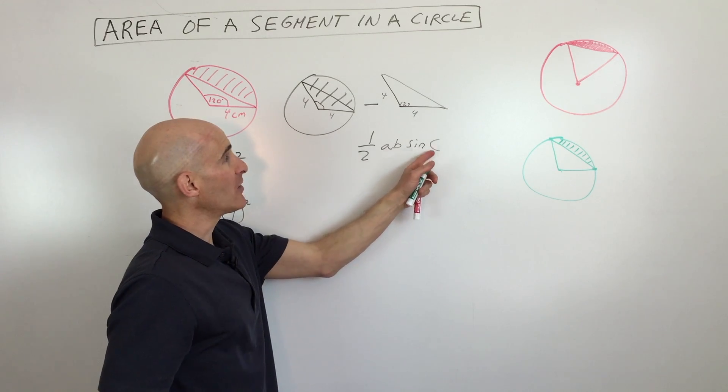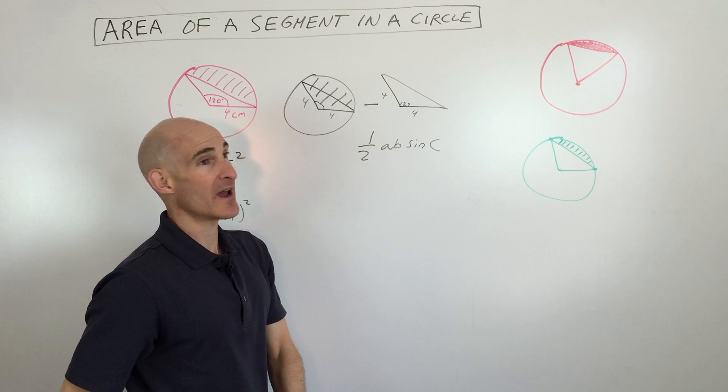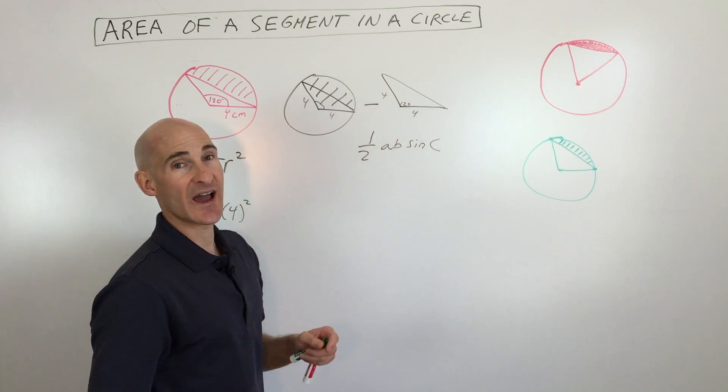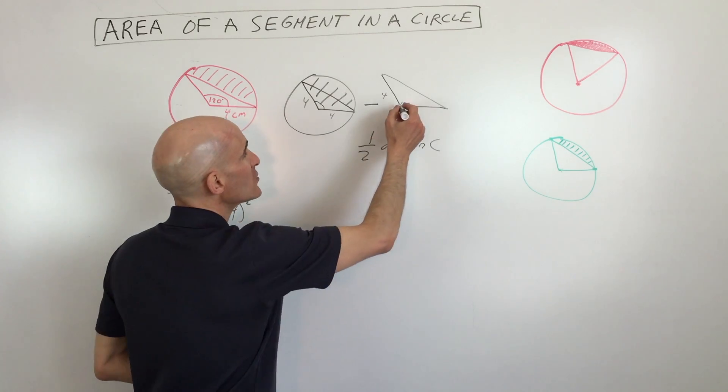And angle C is the angle that's in between the two radii there, in between the two sides. We can use this formula, or what we can do is we can subdivide this triangle.